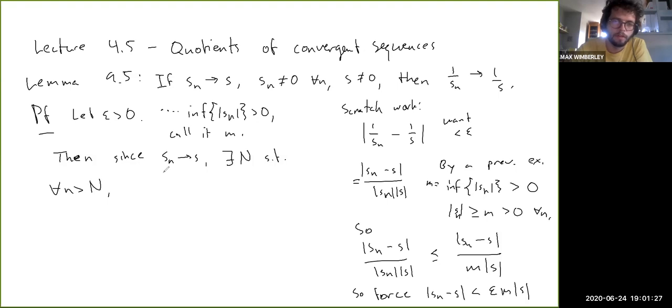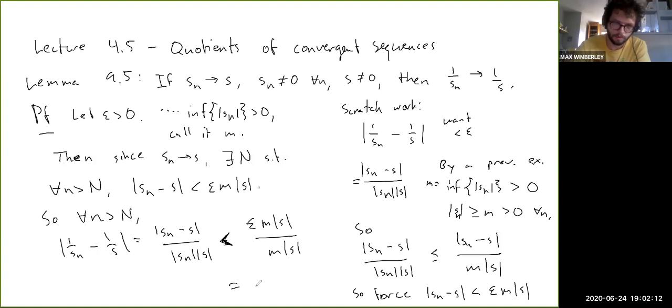Then, because Sn converges to S, there exists a capital N such that for all little n greater than capital N, we have |Sn - S| is less than epsilon M |S|. So for all little n greater than capital N, |1/Sn - 1/S| equals |Sn - S| over |Sn||S|, which is less than epsilon M|S| over M|S|, which is just epsilon, and we're done.